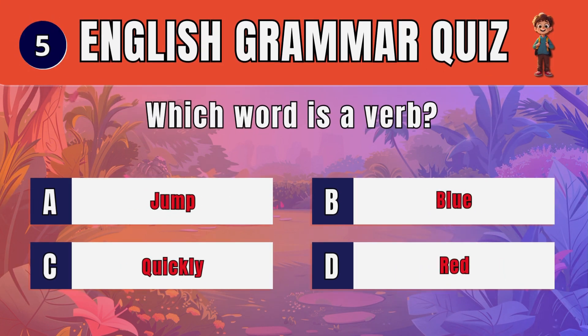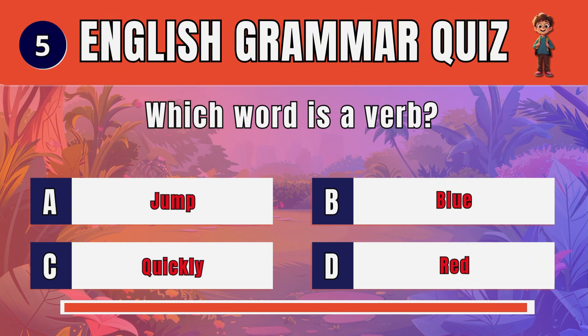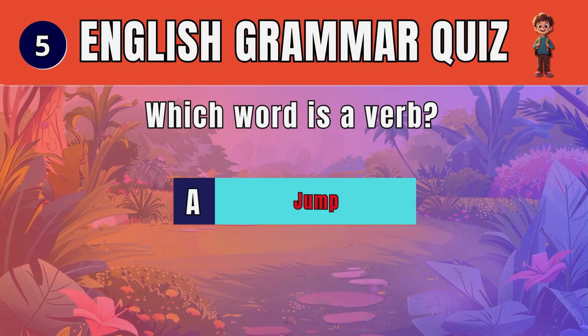Question 5. Which word is a verb? The answer is: jump.